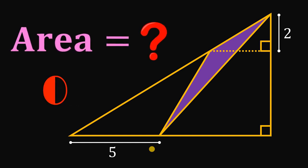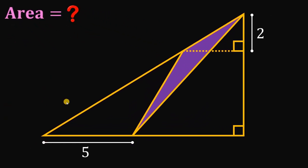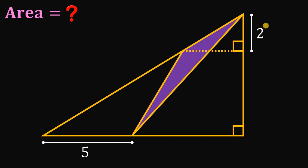And now, let's answer this question together. So given this figure, our goal is to find the area of the shaded region. The only given is this side length which is 2 units, and this side length must be equal to 5 units. Our goal is to find the area of this triangle right over here.